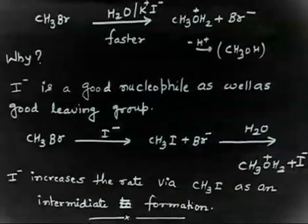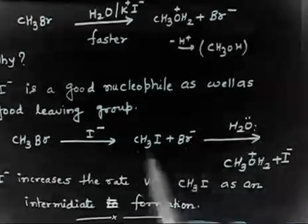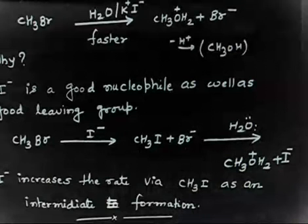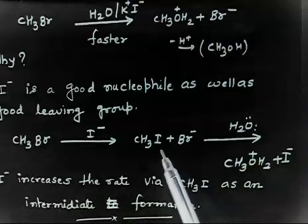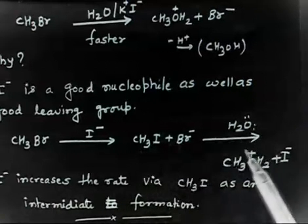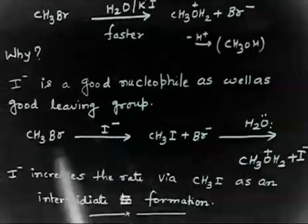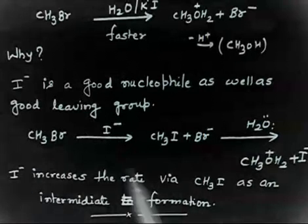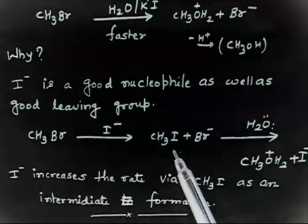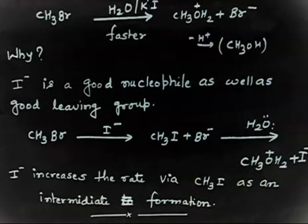Now I- is also a good leaving group. So in the next step, H2O attacks on CH3I and I- leaves. Br- is not a good leaving group, but I- is a good leaving group, so H2O can attack and I- can leave easily — the rate of this reaction increases. Also, I- is a better nucleophile than Br-, so alkyl bromide is converted into alkyl iodide, and then water converts it to CH3OH2+, which loses H+ to give CH3OH.